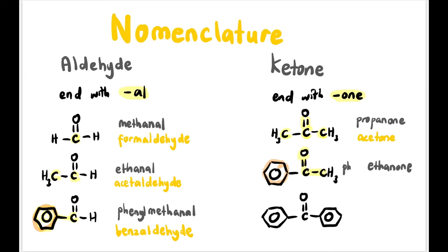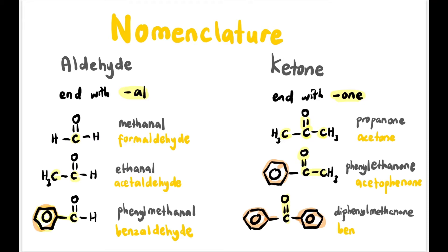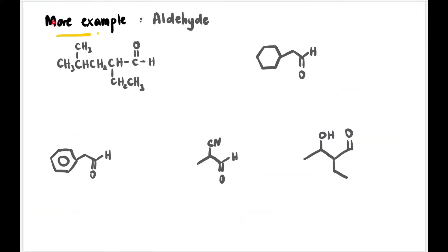So the name is phenyl ethanone, and its common name — which we learned in the chapter on aromatic compounds — is acetophenone. Last but not least, if two benzene rings are attached to one carbonyl, the parent is methanone and the substituents are two phenyl groups, so the name is diphenyl methanone, and the common name is benzophenone.